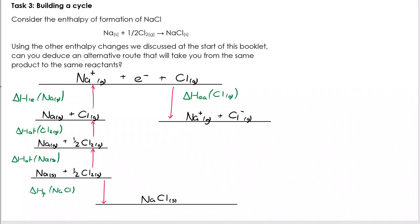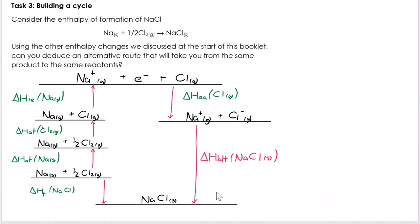What I now have is a gaseous positive ion and a gaseous negative ion. The enthalpy of lattice formation is the enthalpy change when one mole of solid ionic compound is made from its gaseous ions — bringing them together, so it's exothermic, and the arrow goes down. Lattice dissociation would be exactly the same place, but the arrow would be in the opposite direction.